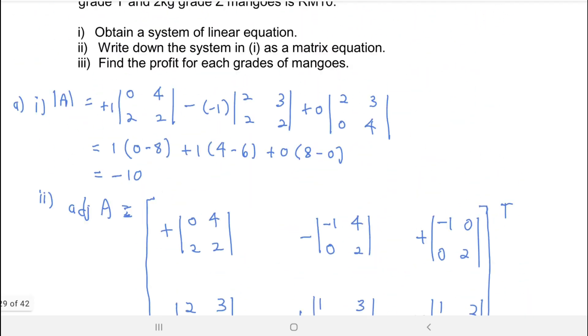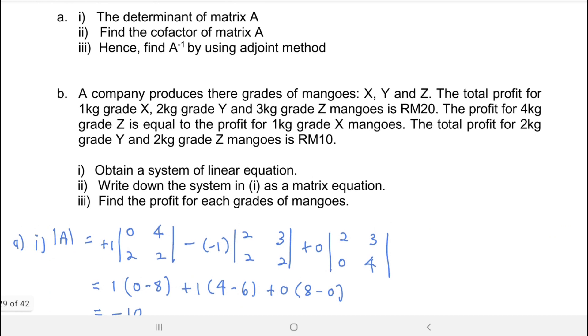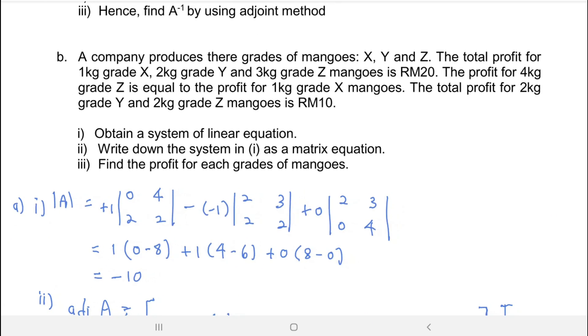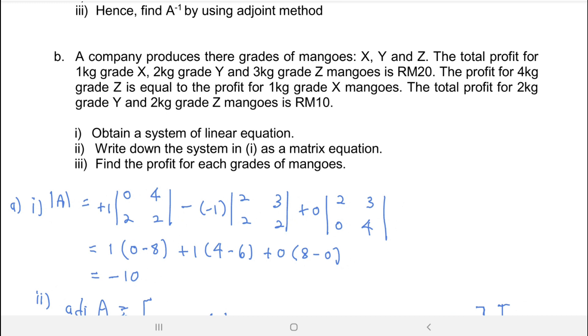For question B, you read the question carefully. A company produces 3 grades of mangoes: X, Y, and Z. The total profit for 1 kilogram grade X, 2 kilogram grade Y, and 3 kilogram grade Z mangoes is RM20. The profit for 4 kilogram grade Z is equal to the profit for 1 kilogram grade X mangoes. The total profit for 2 kilogram grade Y and 2 kilogram grade Z mangoes is RM10.